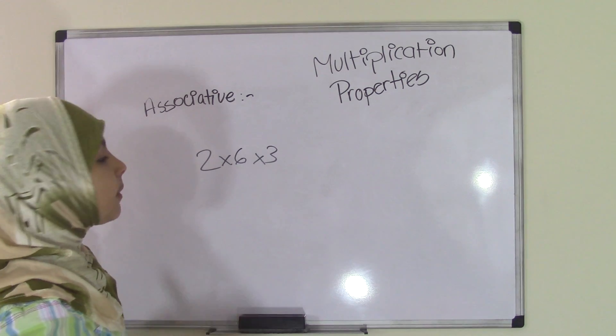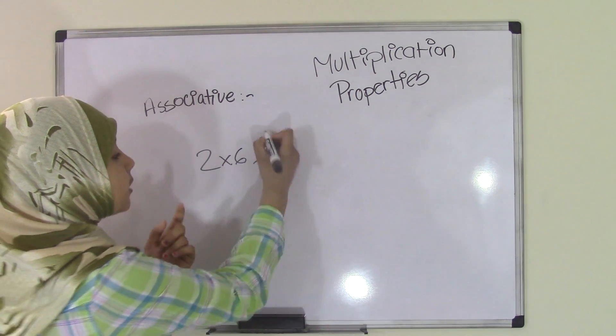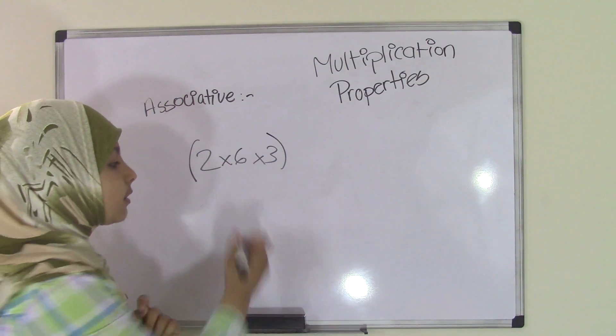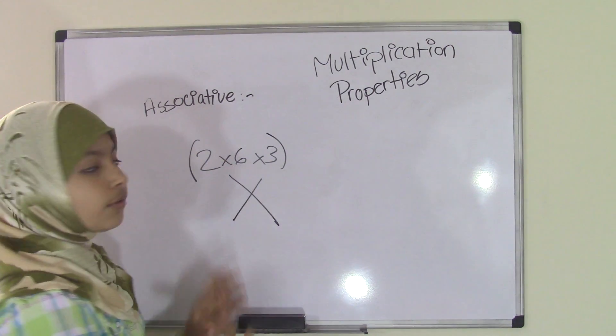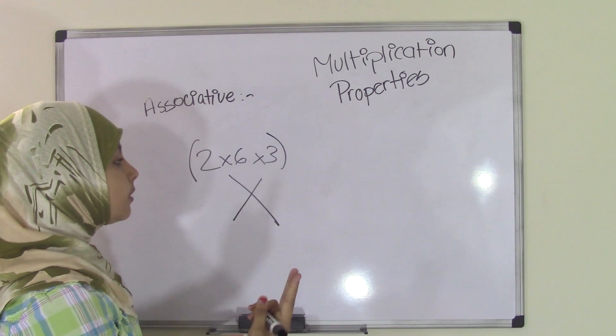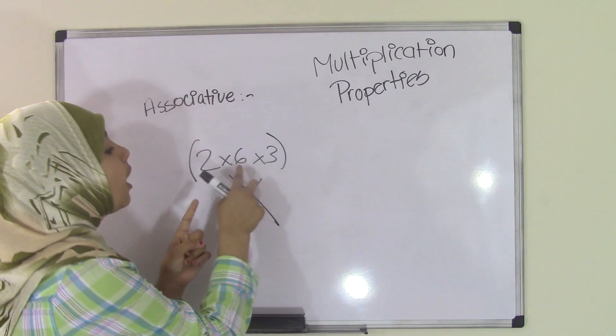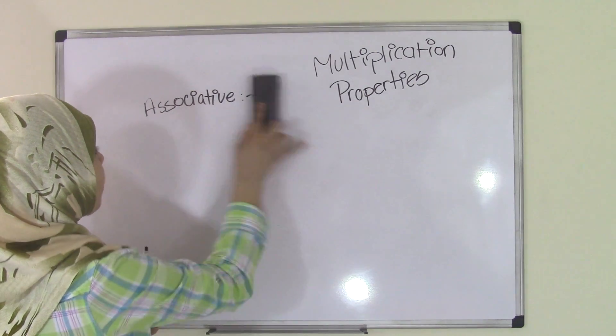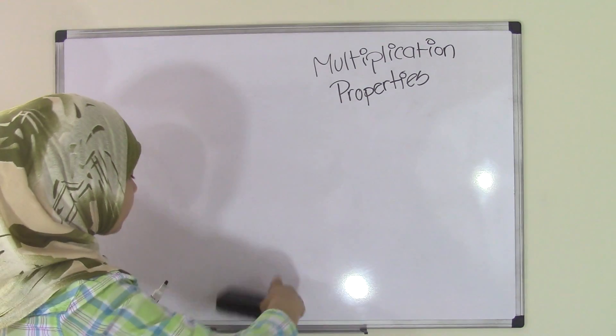You can't just say, 'Okay, I'm going to place parentheses by 2 and 3.' You can't go like that because then you're putting the whole equation in the parentheses. That's wrong. Don't do that. You can only put in two numbers, and they have to be together. So 6 and 3 or 2 and 6, that's how you can put them. So that's pretty much the associative property, and I hope you guys understood that.